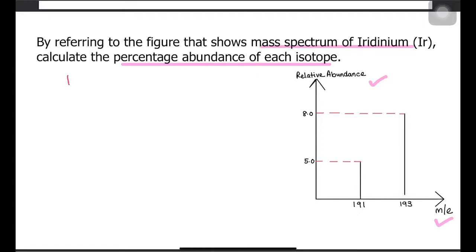Here I'll be choosing iridinium 191 and its relative abundance would be 5.0 divided by the total relative abundance and this value is 10, multiplied by hundred percent since the question is asking us percentage abundance. The value should be 38 percent.